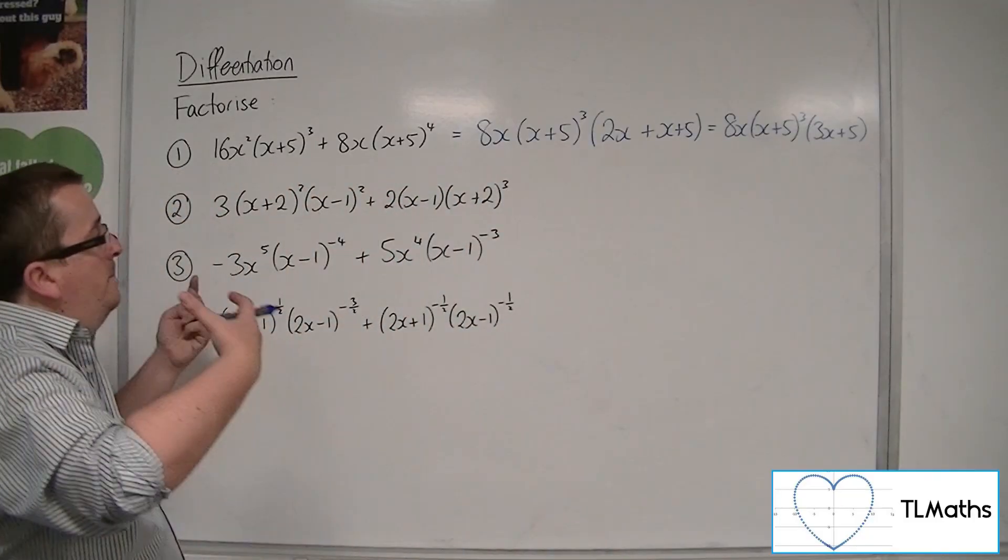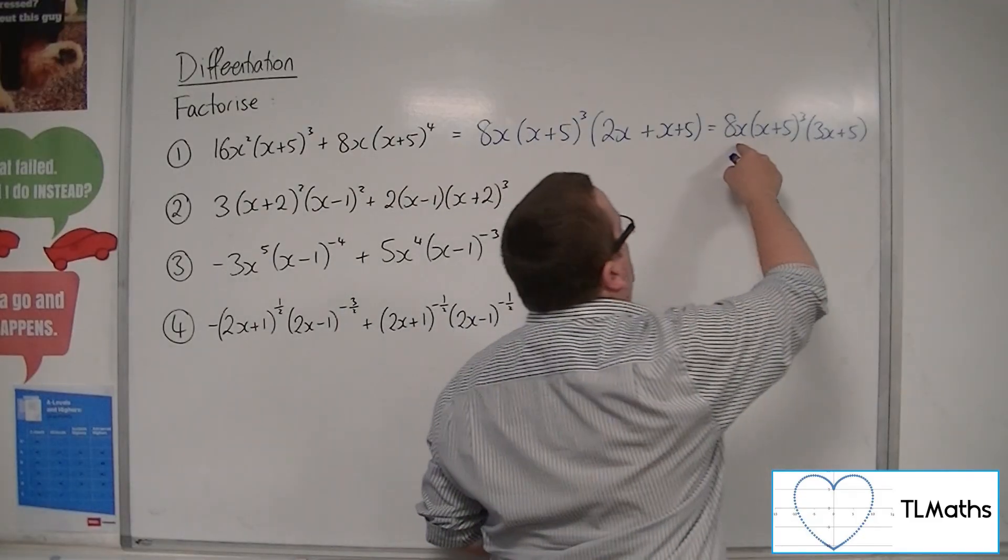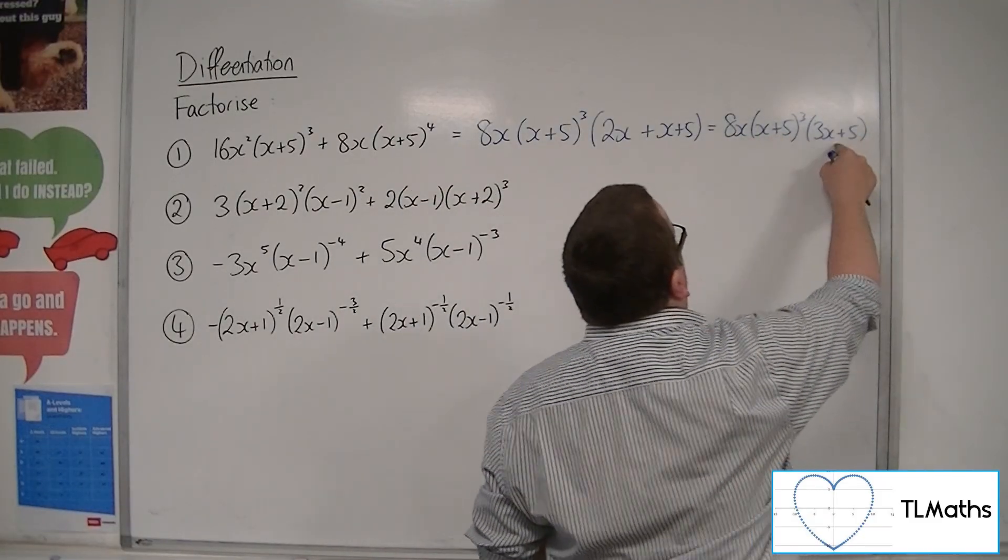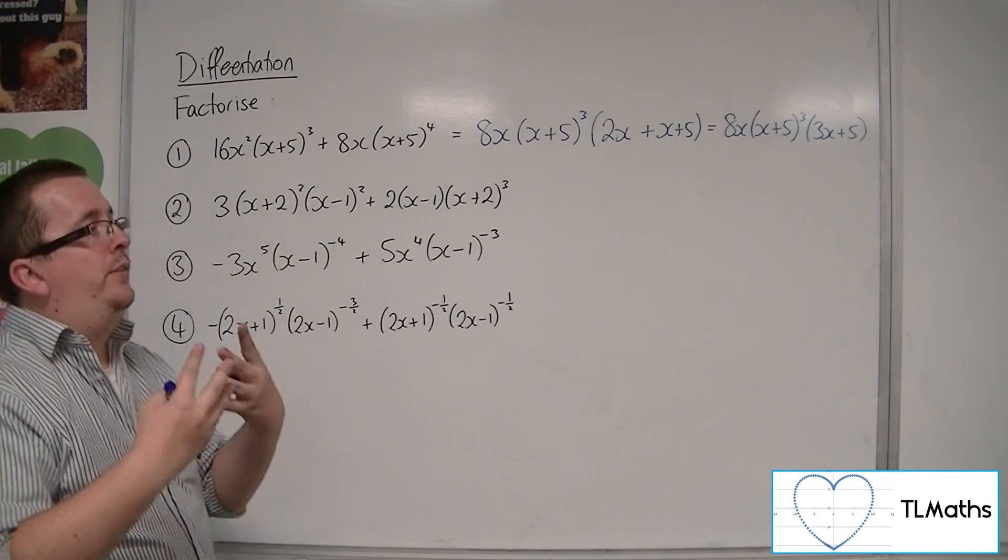So if I was then asked, where are the stationary points? I could say they're at 0, -5, and -5/3. They're the values of x that will make those brackets 0.